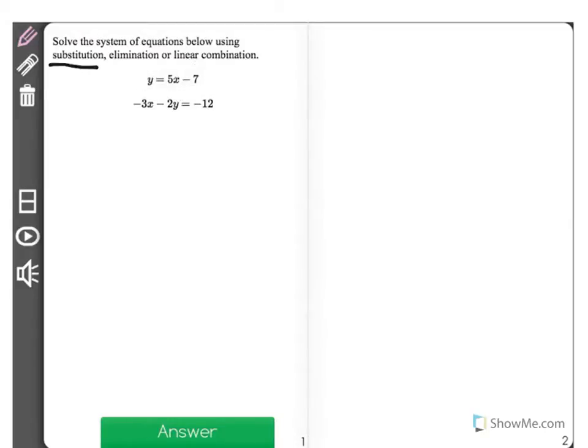So, I'm going to go ahead and do that. Negative 3x minus 2, and here's where I'll input y. It says y is equal to 5x minus 7, so I'm going to input 5x minus 7 equals negative 12.